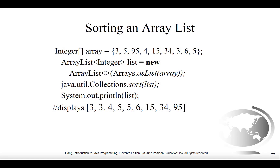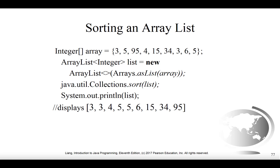Another useful method in Collections is Collections.sort, which as the name implies, can sort elements in an ArrayList — but again, it requires an ArrayList and won't work with a regular array. If we start with a regular array of Integers — 3, 5, 95, 4, 15, 34, 3, 6, 5 — and want to sort them in ascending order, we first transform our array into an ArrayList using the same technique as before. This time it's an ArrayList of Integers, so we need the wrapper class, using capital Integer instead of int, because ArrayLists don't hold primitives.